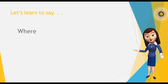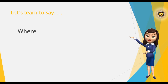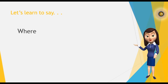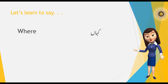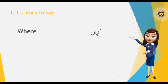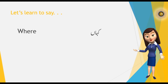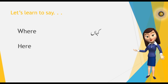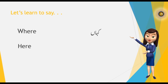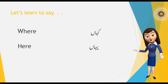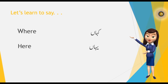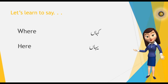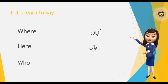Let's learn to say 'where' and 'here' in Urdu. In English we say 'where,' and in Urdu it is 'Kahaan.' In English we say 'here,' and in Urdu it is 'Yahaan.'